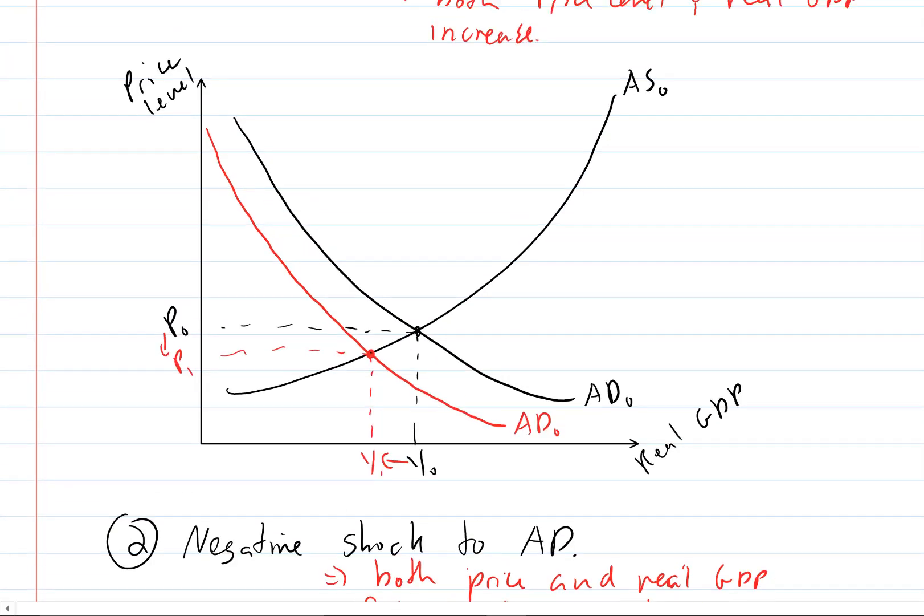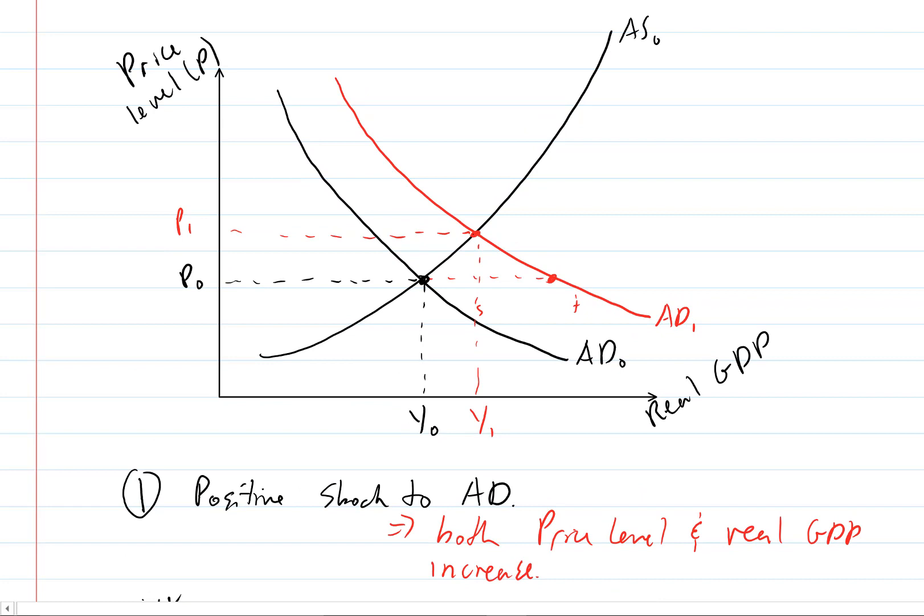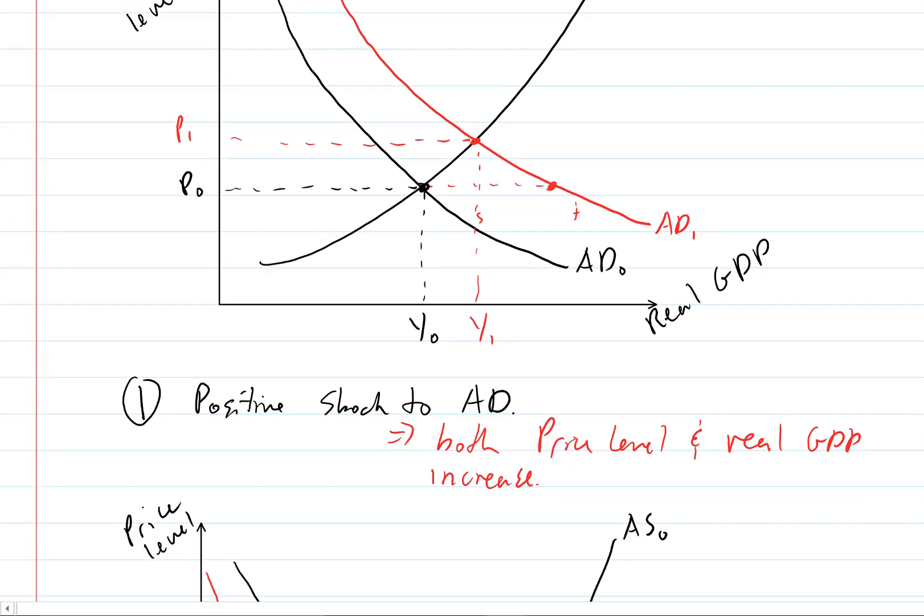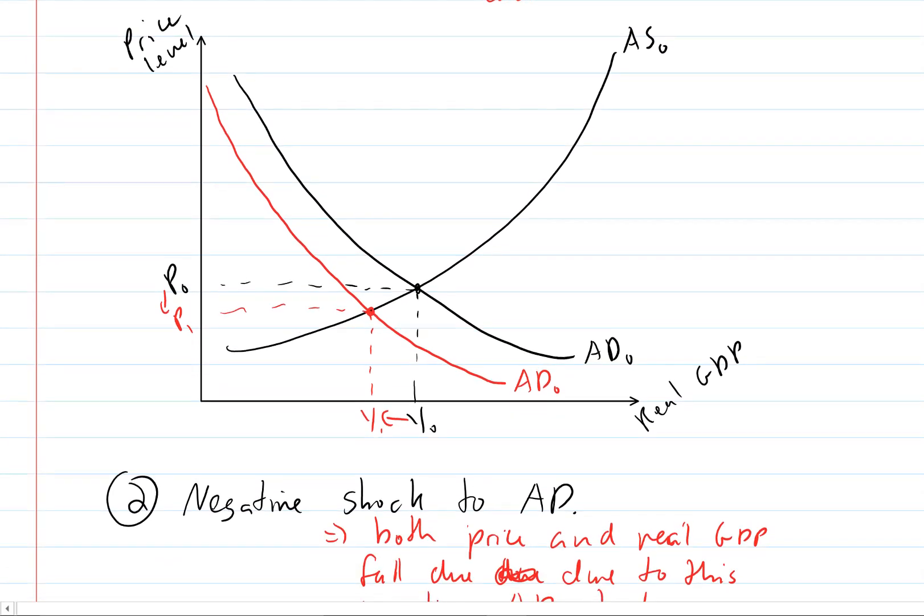So now we've seen what happens to equilibrium when we have a positive aggregate demand shock. We see that real GDP and the price level both move in the same direction and both moved up. Whereas if we have a negative demand shock, we see that both the price level and the real GDP go down.